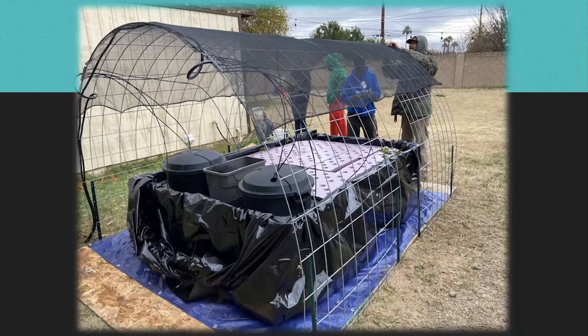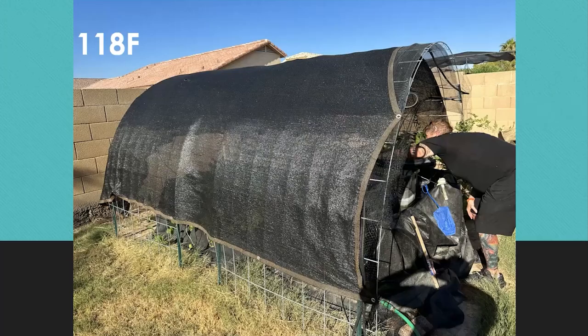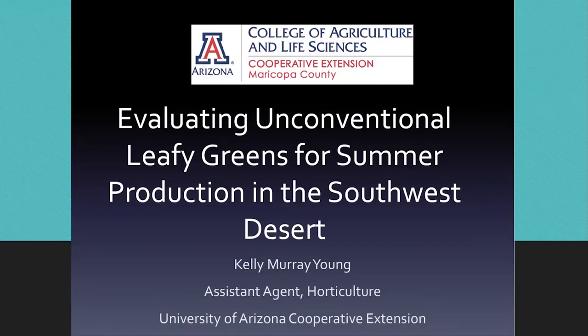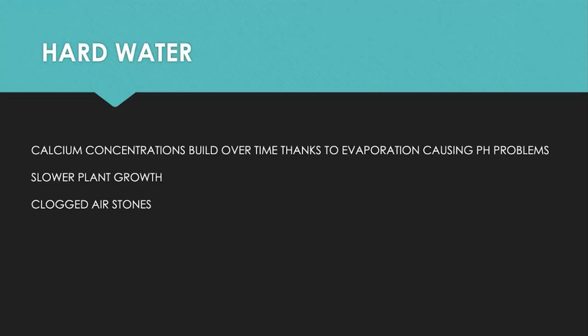How do you farm in 118-degree heat? This was designed for 110 degrees, maybe 118 degrees for a couple of days. Our farmers are now putting on thicker shade screens — this one here is about 70% — and it has helped them tremendously with shading and sustaining their plants. We're also looking at different kinds of plants that do better in the heat, including some kind of heat-tolerant leafy greens.